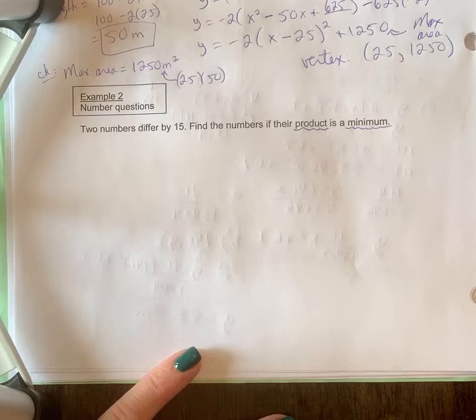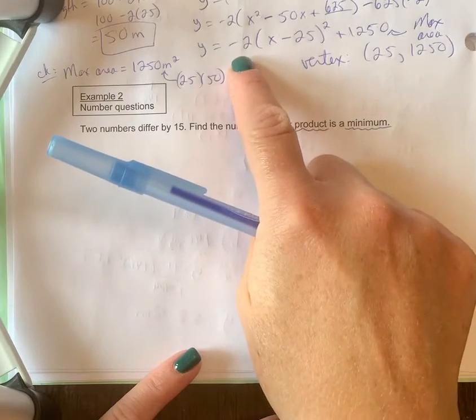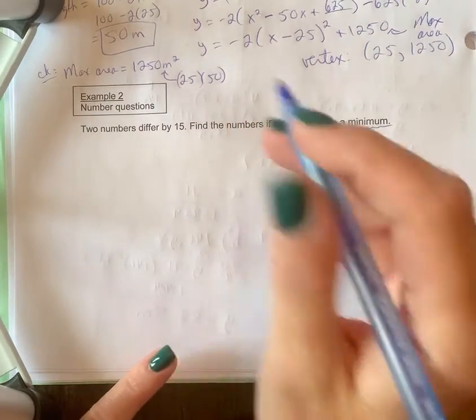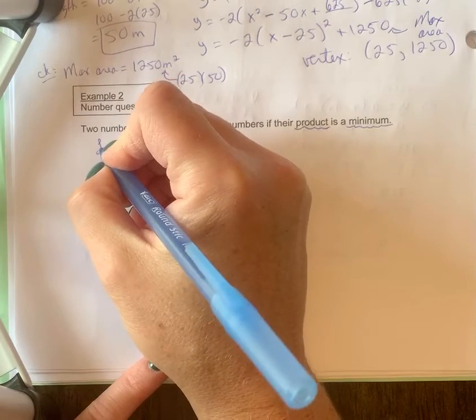In this case it's a min, that means it's going to be a problem that would open up if you were to graph it, so it's going to be a positive a value. In example one we had a negative a value, it was a max problem.